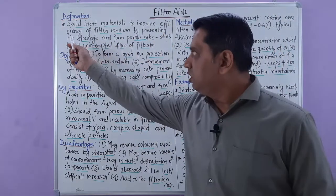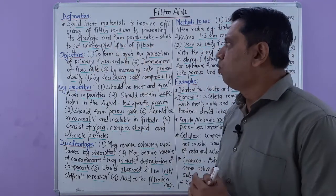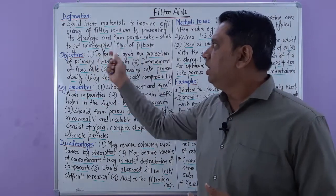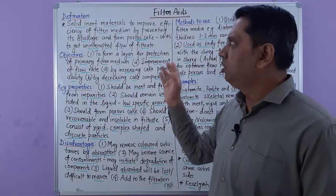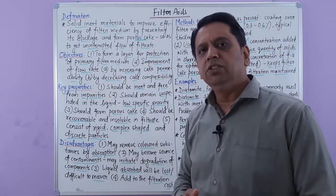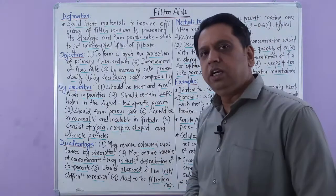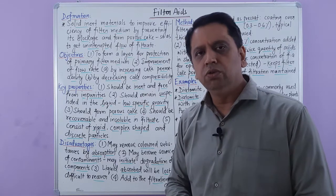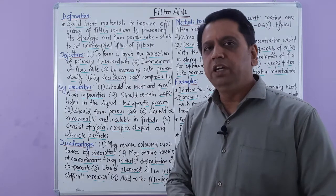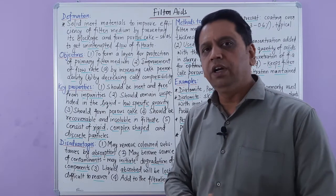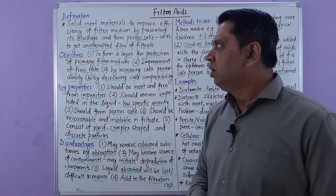First of all, what are filter aids? Filter aids are solid inert materials used to improve the efficiency of the filter medium by preventing its blockage, and they form a porous cake so as to get uninterrupted flow of filtrate. Simply, these are the solid inert materials which are used to increase filtration efficiency and increase the rate of filtration.